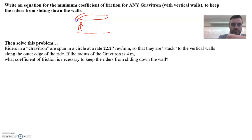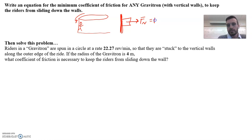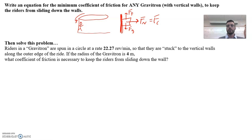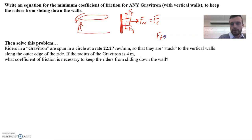Let us consider the forces acting on you as you are on the wall. The wall pushing on you towards the center of the circle is the centripetal force — the normal force — for the gravitron type of problem. Of course, there's gravity acting down on you. If we just left the free body diagram as is, we would accelerate downward, but we don't. We stick to the wall. That's the friction force. So there are two directions: the normal force acts as the centripetal force towards the center of the circle, and friction and gravity are in equilibrium because we're not moving up or down.